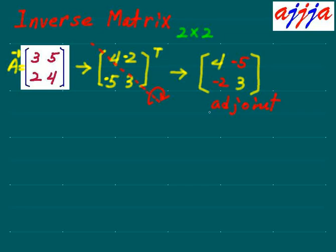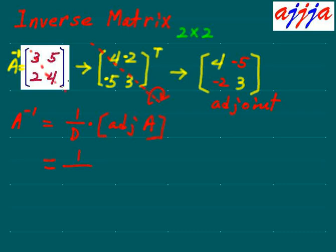So now we've found the adjugate — they also call it adjoint. The formula is: A to the negative first power, which is the inverse, equals one over the determinant times the adjugate of A. The determinant is computed as three times four minus five times two, which is twelve minus ten, equal to two.